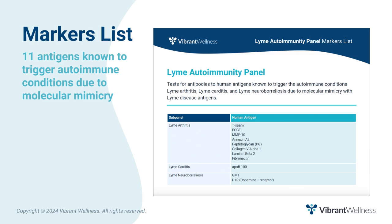The Lyme Autoimmunity Panel includes 11 antigens known to trigger autoimmune conditions due to molecular mimicry. This includes 8 antigens seen in Lyme arthritis: T-SPAN-7, ECGF, MMP10, Annexin A2, Peptidoglycan, Collagen V-alpha-1, Laminin-beta-2, and Fibronectin. Also, 1 antigen seen in Lyme carditis, which is APO-B100, and 2 antigens seen in Lyme neuroborreliosis, which are GM1 and dopamine 1 receptor.